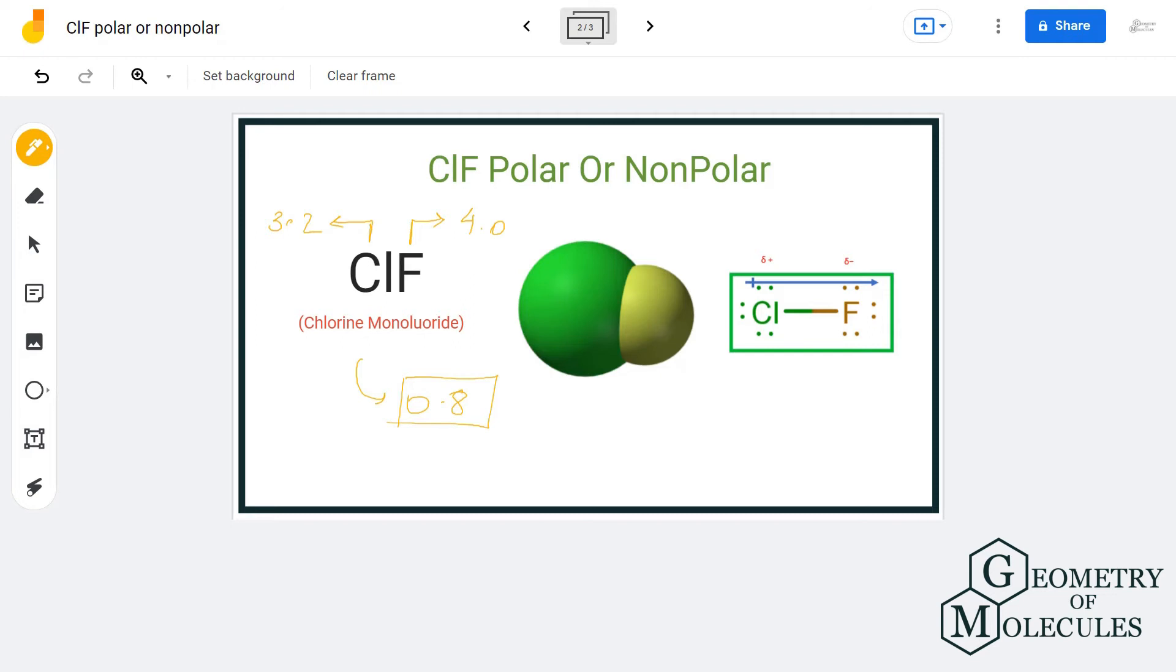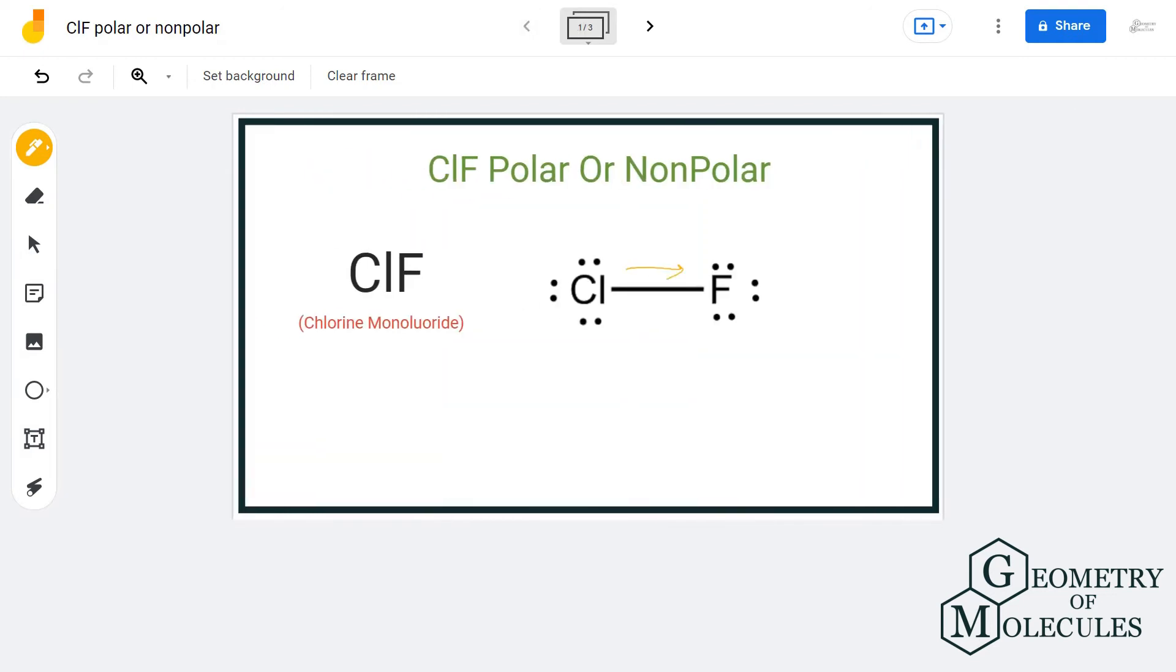The bond between chlorine and fluorine atom is a polar bond. As a result, there will be a dipole moment resulting towards the direction of fluorine atom. And as there is a dipole moment which is not cancelled out, there will be poles formed in this molecule.